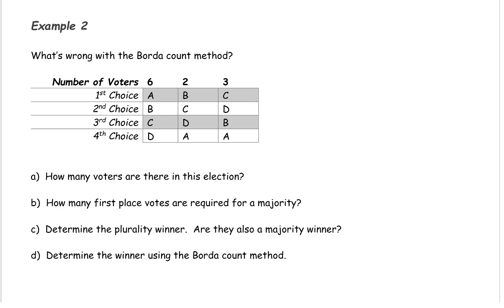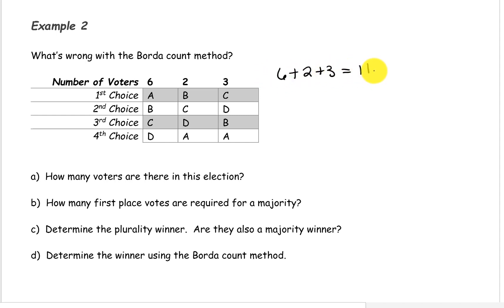Hello. In this example, we're going to take a look at one of the problems that can occur using the Borda count method. So we have our preference schedule here, and first we're going to determine how many voters there are in this election. To determine the number of voters, you would add the numbers on the top. So 6 plus 2 plus 3 gives us 11 voters.